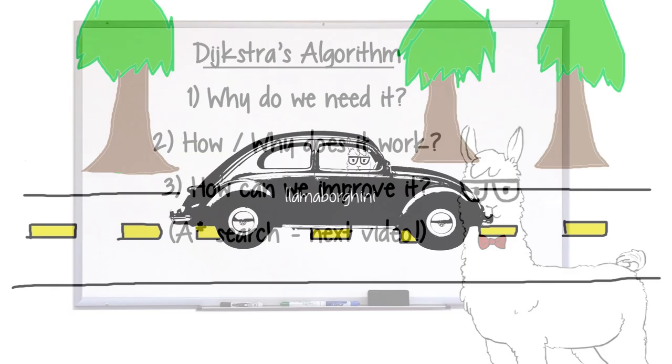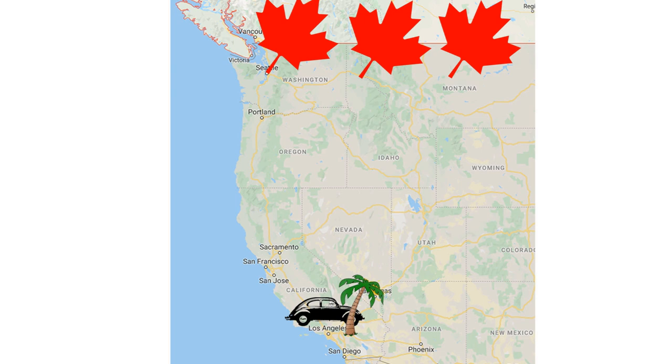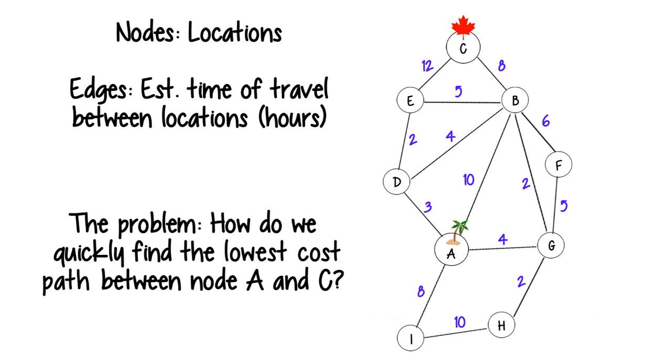So first, let's recap what we want to do. To have an actual example, let's say you want to drive from LA to Canada, and you really want to get there fast for reasons. Everything you know is here in this graph. Nodes are locations, edge costs are travel times in hours, and we want our computer to quickly find the fastest path between nodes A and C.